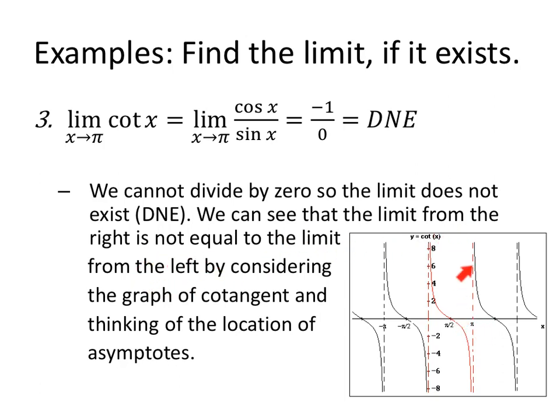The limit from the right is going to positive infinity, whereas the limit from the left is negative infinity. And that gives us some asymptotes in this case.